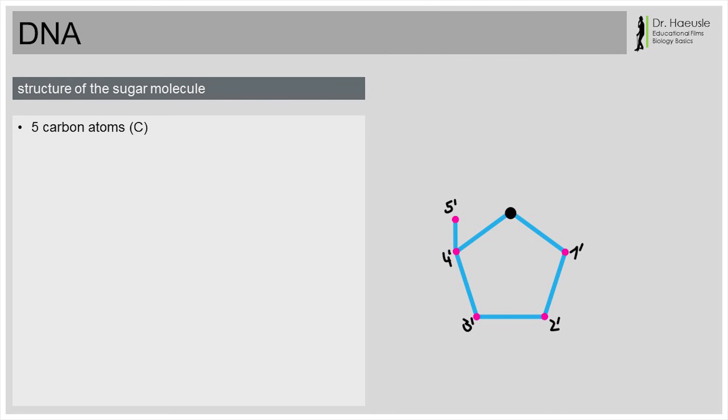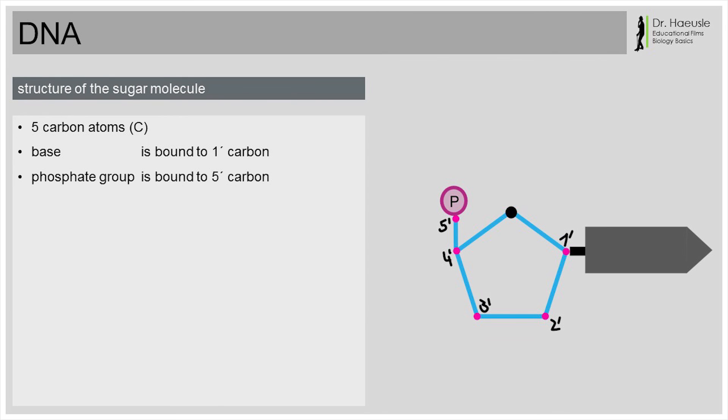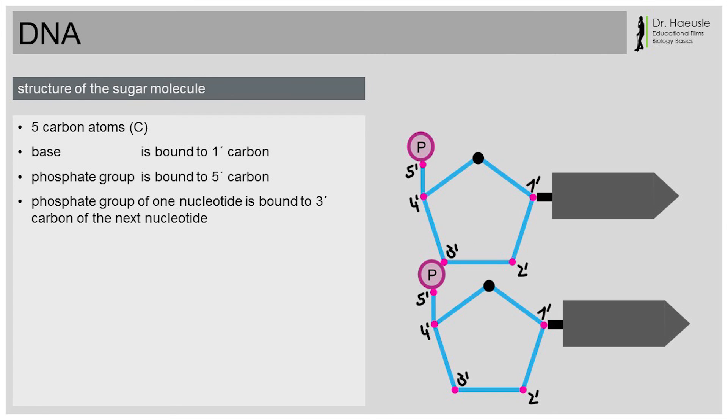Like we already mentioned before, one sugar molecule, one base and one phosphate group form a nucleotide. The base is always connected to the 1' carbon. The phosphate is always connected to the 5' carbon. Many nucleotides are linked together to form a DNA strand. To do this, the phosphate of one nucleotide is connected to the sugar of the next nucleotide. The phosphate of one nucleotide is bound to the 3' carbon of the sugar of the next nucleotide. So, in the chain, each sugar molecule is connected to two phosphates. Exactly. Each sugar has one phosphate bound to its 5' carbon and one phosphate bound to its 3' carbon.